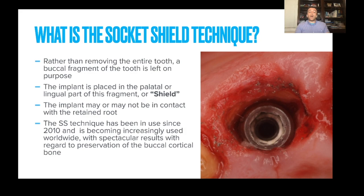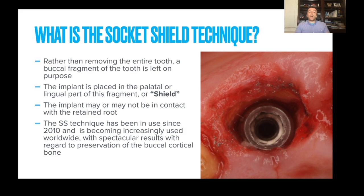We know that total tooth extraction leads to some level of bone loss, especially when we consider the bundle bone and the buccal cortical plate — shown from the works of Arugio and Linde. Rather than removing the entire tooth, a buccal fragment of the tooth is left in place on purpose. The implant is placed in the palatal or lingual aspect of this fragment, what we call the shield. It's very important that you don't have any root mobility.